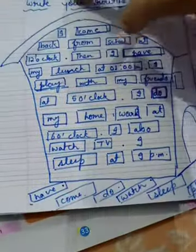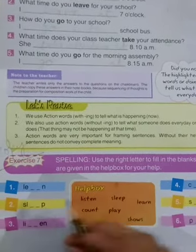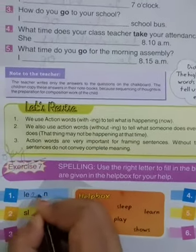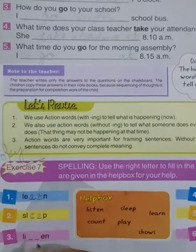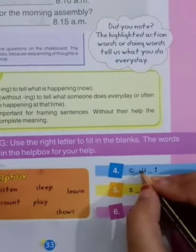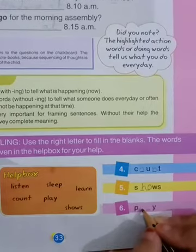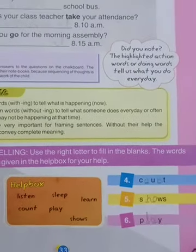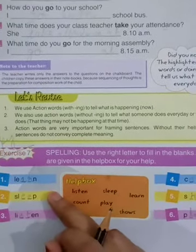After the housework, you will do exercise seven — spellings. The first spelling is learn — l-e-a-r-n. Second is sleep — s-l-e-e-p. Next is listen — l-i-s-t-e-n. Next is count — c-o-u-n-t. All these are action words. Next is show — s-h-o-w. The last one is play — p-l-a-y. You have to learn these spellings as well.